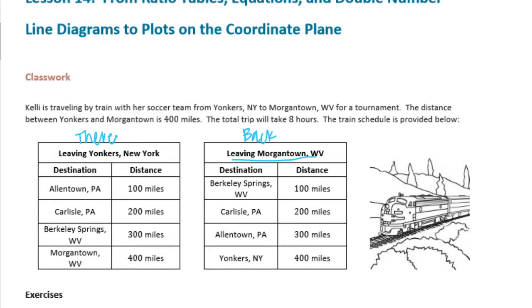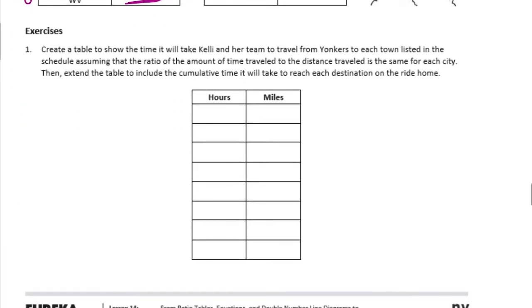Okay, so we know in the information that we read it said that the trip is going to take eight hours and it is 400 miles. So we know here Morgantown, West Virginia, that's 400 miles and it's going to take eight hours. We wanted to scale that down to 100 miles. We need to divide 400 by four to get 100, so let's divide eight by four to figure out how long that's going to take, and that would be two. So it's going to take two hours to go 100 miles.